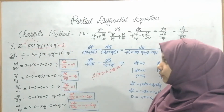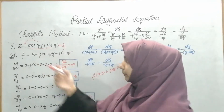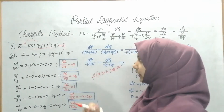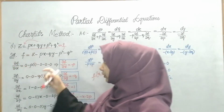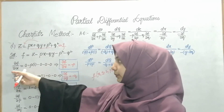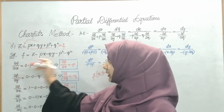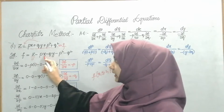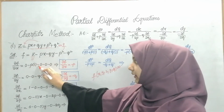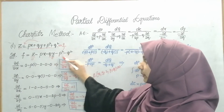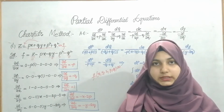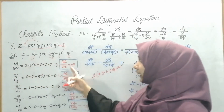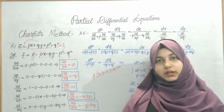Now I need to partially differentiate f with respect to all variables. Differentiating with respect to x: there is no x term in z, but in -px the coefficient of x is -p, so ∂f/∂x = -p. Differentiating with respect to y: similarly, only -qy has a y term, giving ∂f/∂y = -q. Differentiating with respect to z: only z has a z term, so ∂f/∂z = 1.